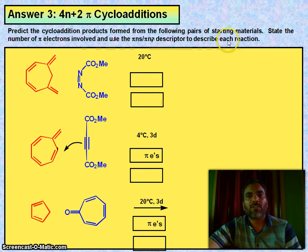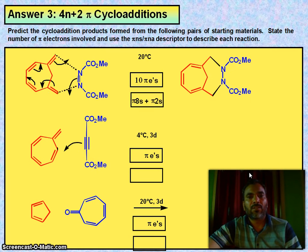Now predict the cycloaddition product formed from the following pairs of starting materials. State the number of pi electrons involved and use the pi and pi star descriptions to describe each reaction. So you have these questions. So you have now answer.